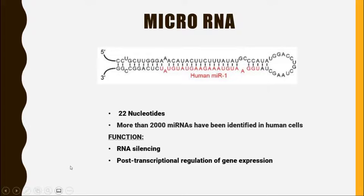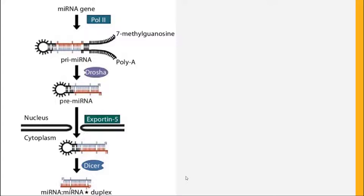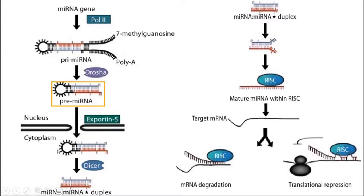The function of microRNA is RNA silencing and post-transcriptional regulation of gene expression. In this picture you can see the miRNA gene producing premature miRNA. Premature miRNA is in the form of a hairpin, as you can see. This premature miRNA then leaves the nucleus and gets into the cytoplasm.